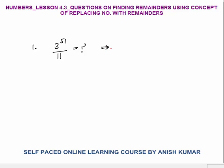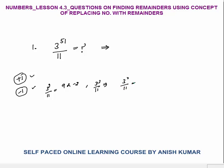Now, 3 raised to power 51 divided by 11. We need to find either a +1 or −1 remainder. 3^1 ÷ 11 gives remainder 3; 3^2 ÷ 11 gives remainder 9 or −2; 3^3 ÷ 11 gives 27 ÷ 11, again not ±1; 3^4 = 81 ÷ 11, again not ±1. But 3^5 = 243 ÷ 11 gives remainder +1, because 242 is completely divisible by 11.